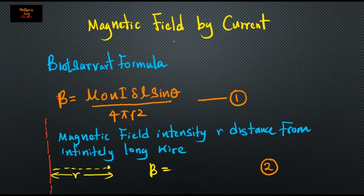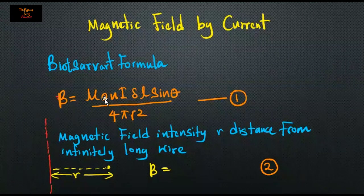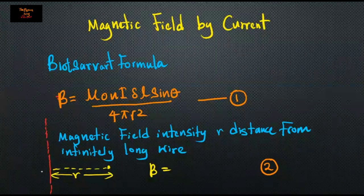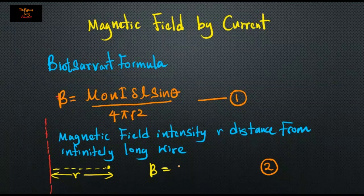For magnetic field by current, the first equation is the Biot-Savart formula: B equals mu-naught n I delta-l sine-theta over four-pi r-squared. Here, n is the number of wires, I is the current, delta-l is a small length, sine-theta is the angle, and r is the distance. For an infinitely long wire, the magnetic field intensity is B equals mu-naught n I over two-pi r.